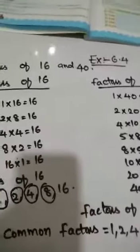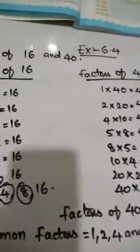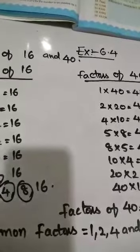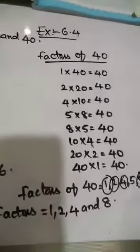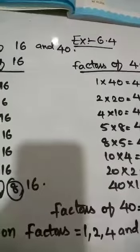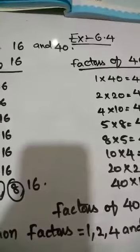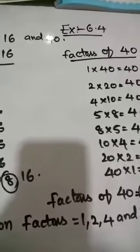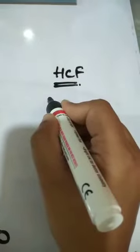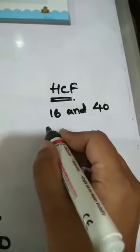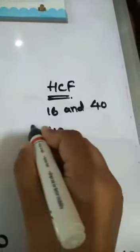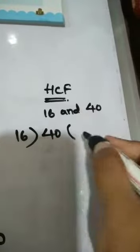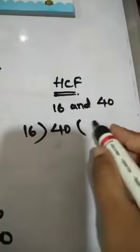After finding the common factors, we have to find the HCF — Highest Common Factor. So let us find this. 40 divided by 16: 16 twos are 32, so we take 16 into 2 equals 32.